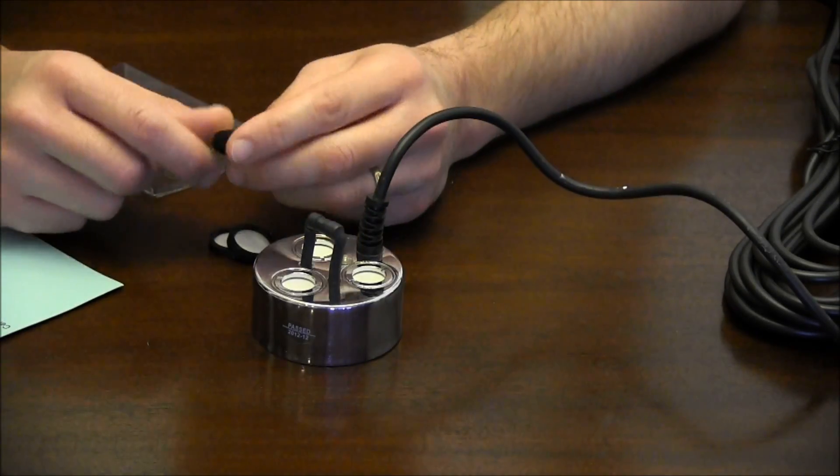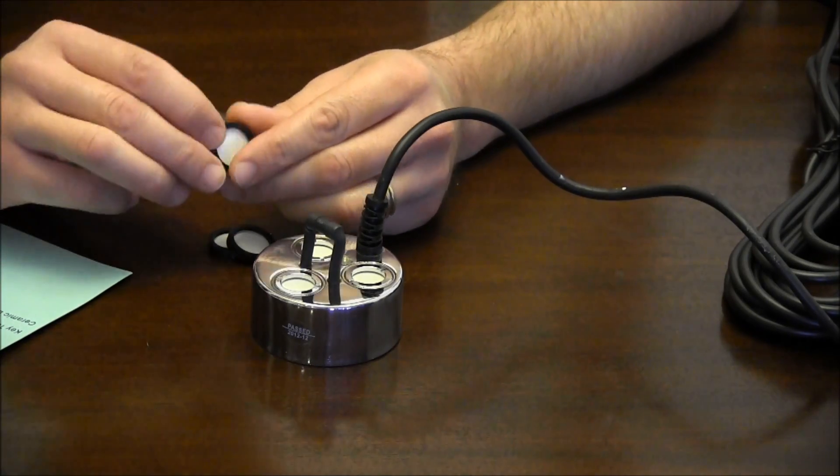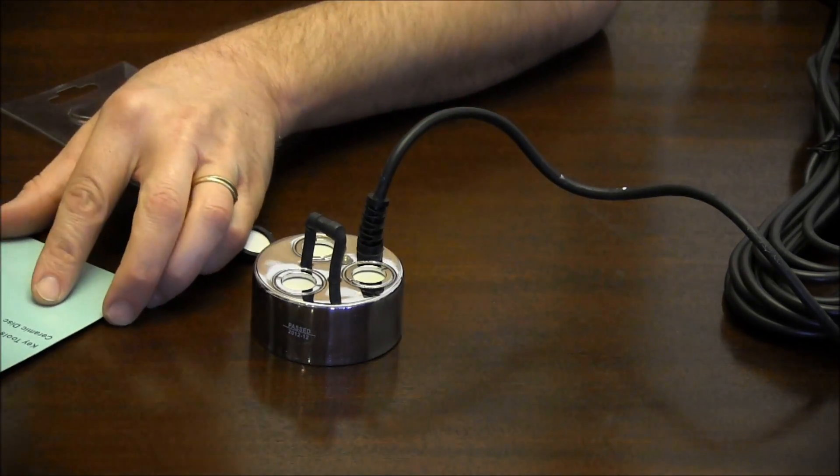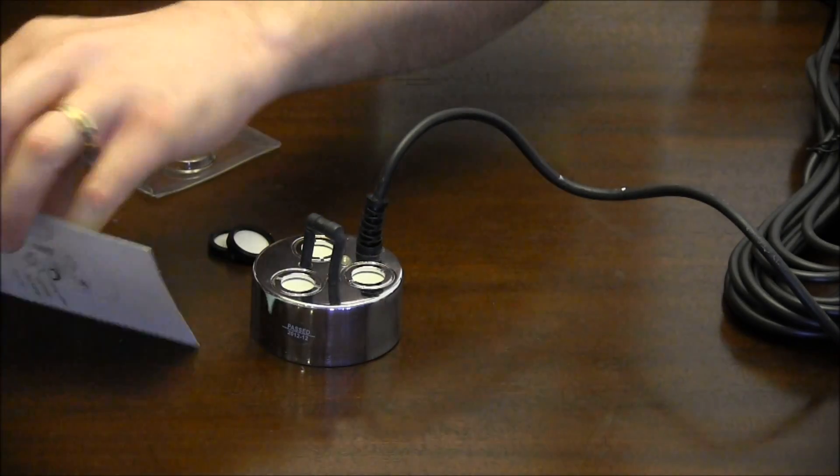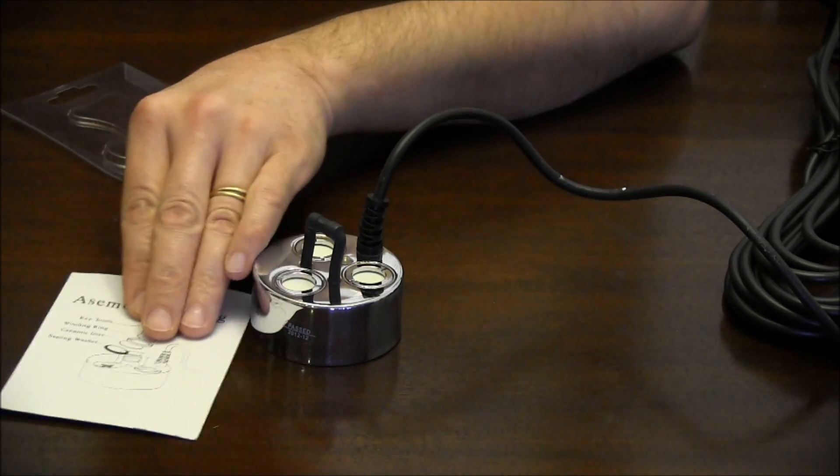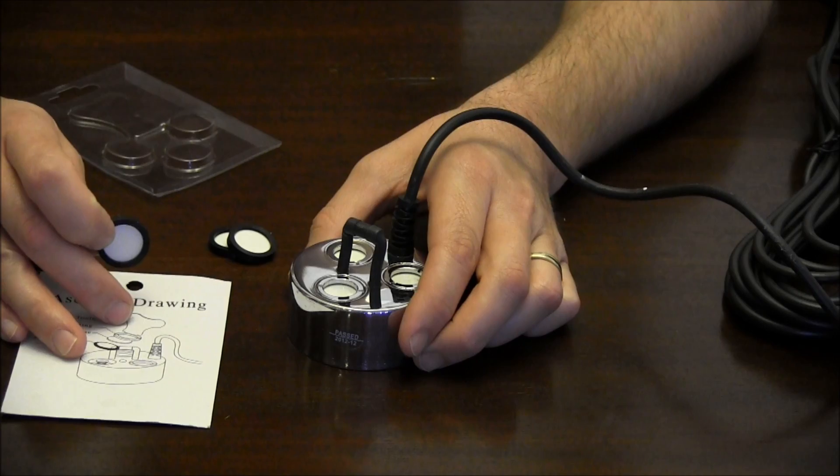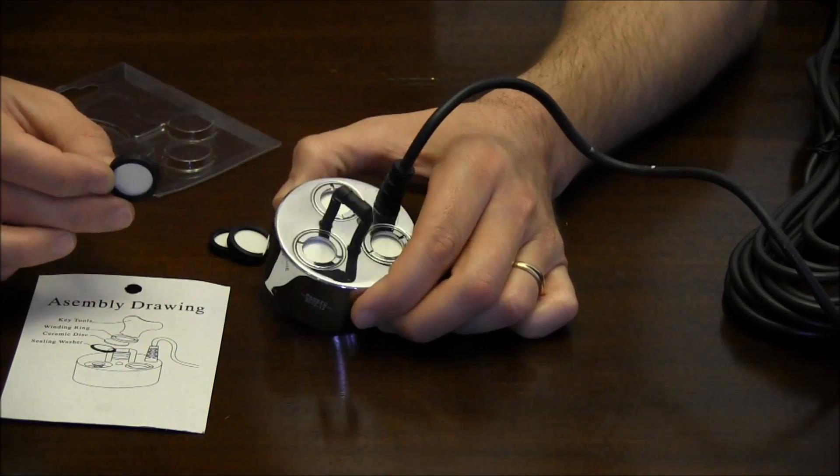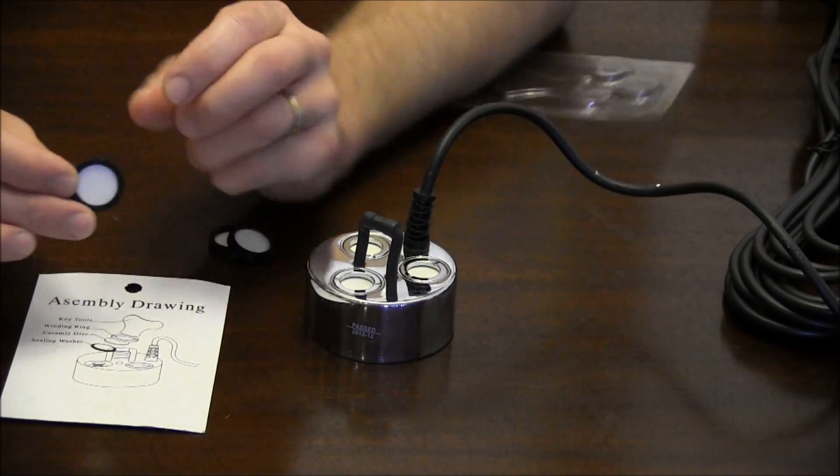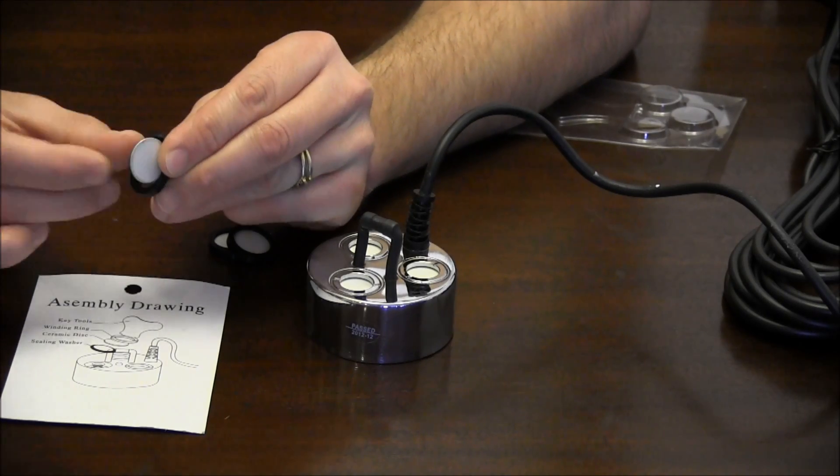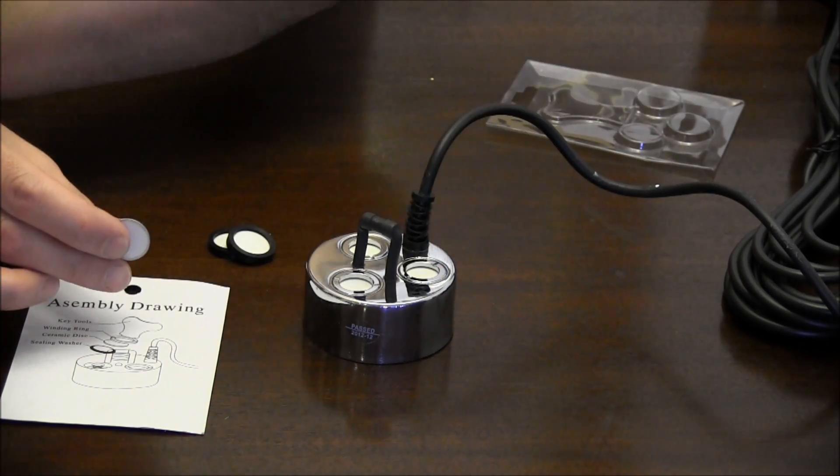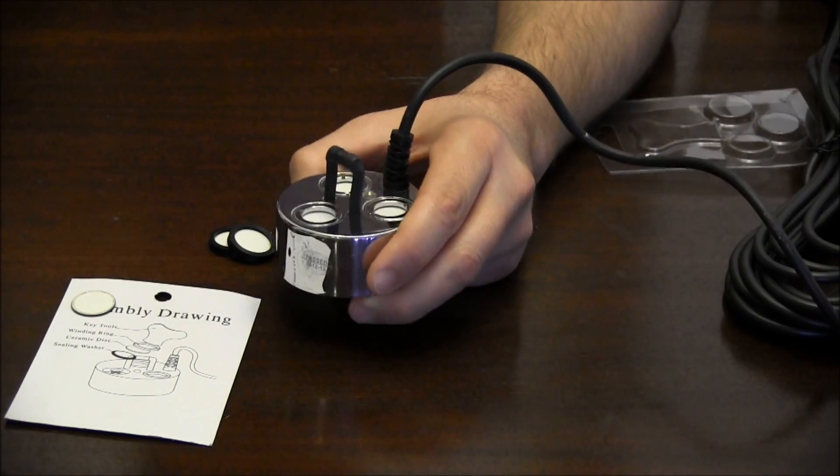A common misconception is these black o-rings on the outside of the units are protective. They do not go in the unit. So when you get it and get ready to put it in, you take this off and just get rid of it—it's garbage.